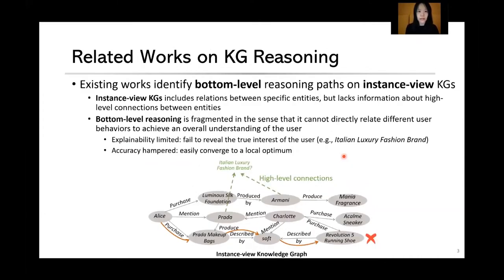Existing works on Knowledge Graph reasoning identify bottom-level reasoning paths on instance-level KGs. Instance-level KGs include relations between specific entities but lack information about high-level connections between entities. For example, they do not know that both Prada and Armani are Italian luxury fashion brands. Based on the instance KG, existing KG reasoning is at the bottom level, which is fragmented in the sense that it cannot directly relate different user behaviors to achieve an overall understanding of the user, and so it fails to reveal the true interest of the user.